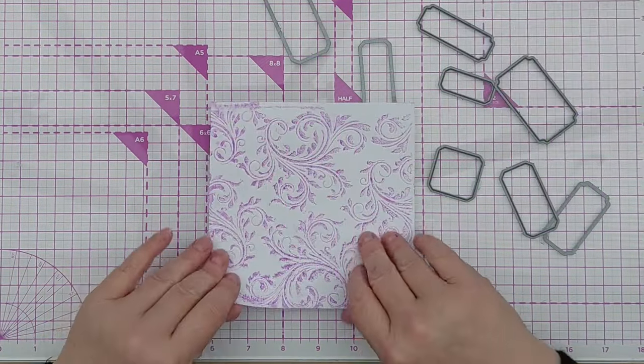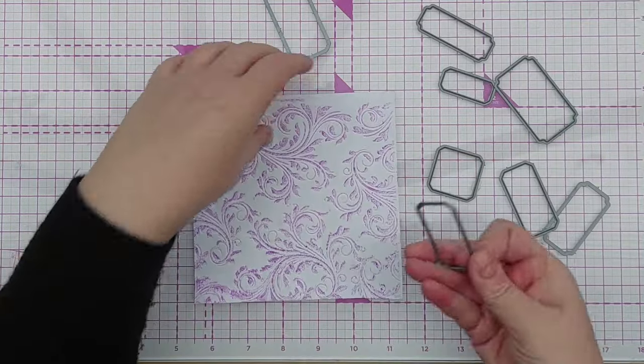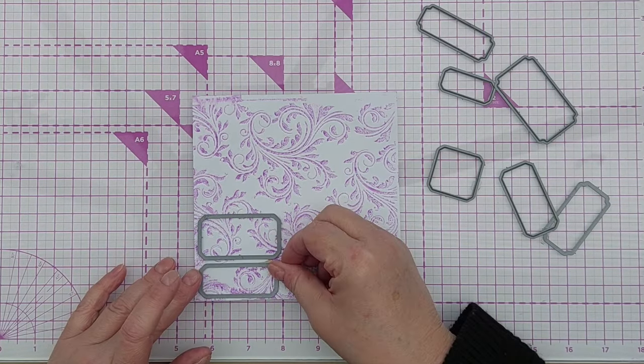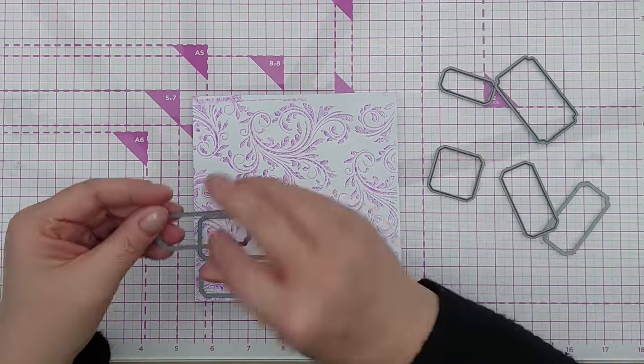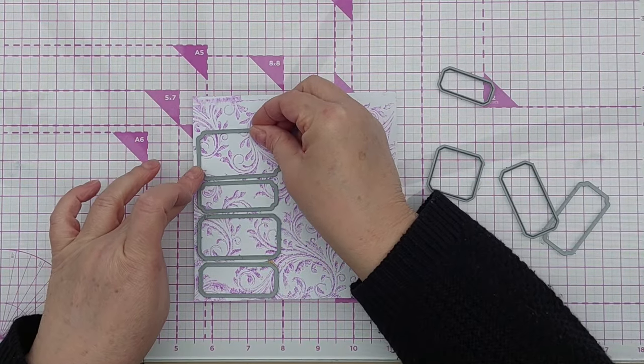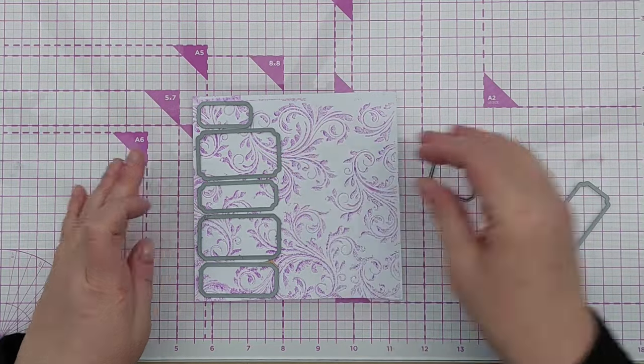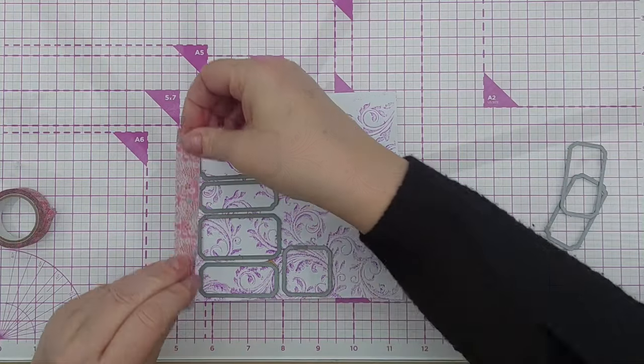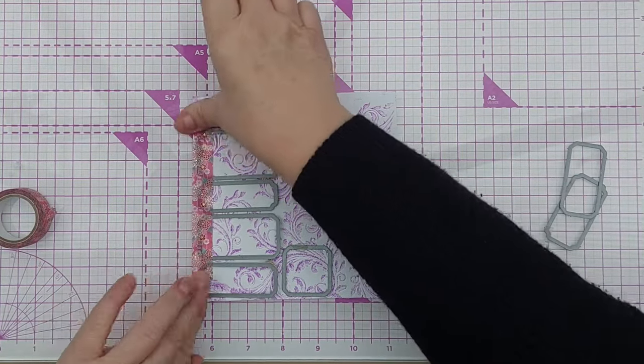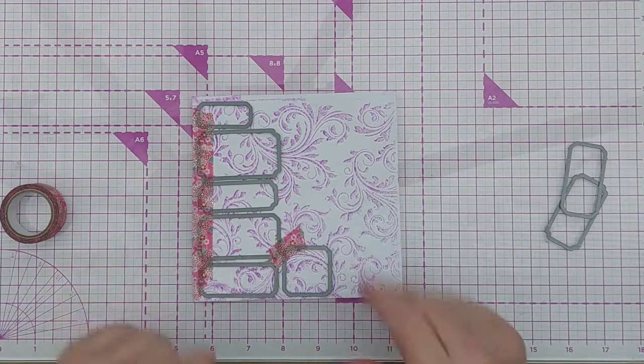I want to die cut some label shapes from both sides of this. These label dies are from L Studio. I got them quite a long time ago and used them loads in my scrapbooking. So I'm going to just run them up this side. I'll just keep them in place here with a bit of washi tape and run this through my cuttlebug to cut it.